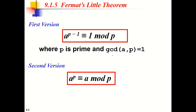In continuation to primes, Euler's phi function, and the Chinese remainder theorem which we discussed in previous classes for forming the foundation for asymmetric key cryptography, we will be learning two more theorems which are called Fermat's theorem and Euler's theorem.